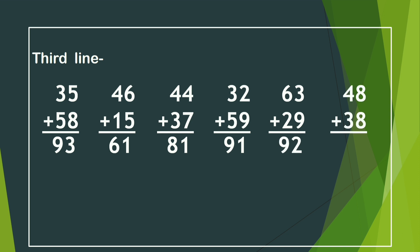Next, 48 and 38. We know 8 and 8 will be 16. We write only 6 below the 8, and the other 1 is added with 4: 4 and 1 is 5, and 5 and 3 is 8. So our answer is 86.